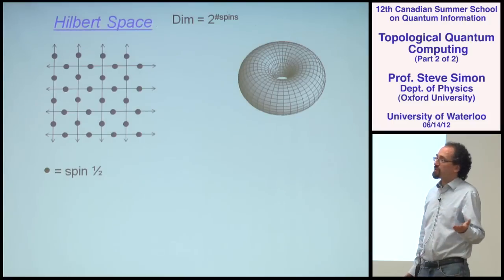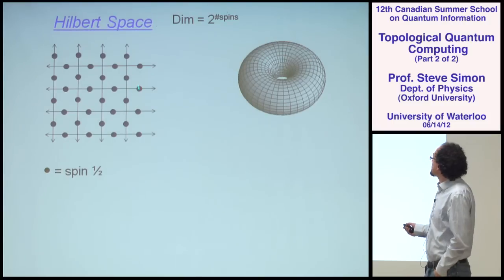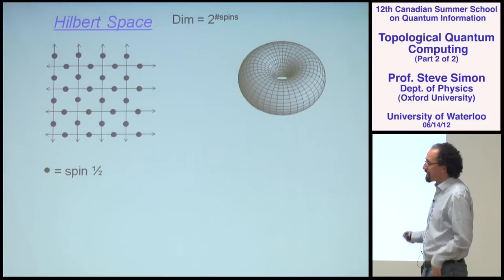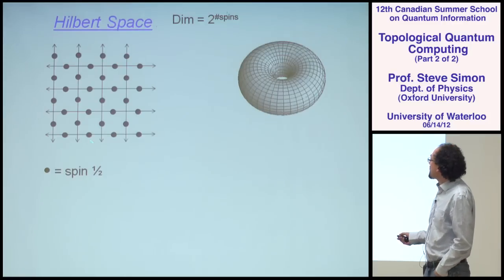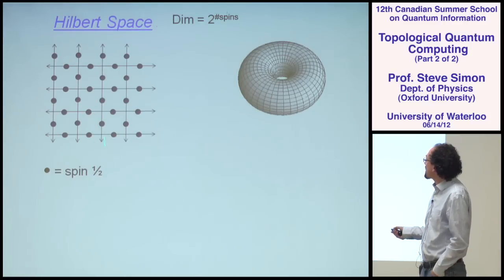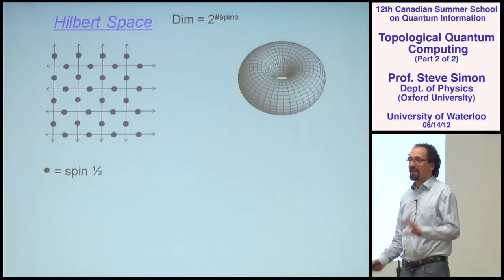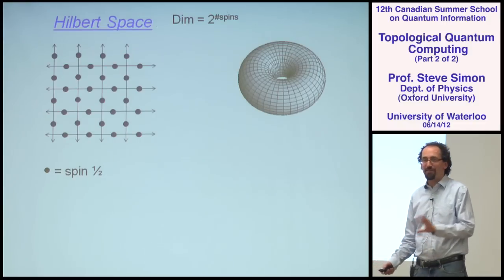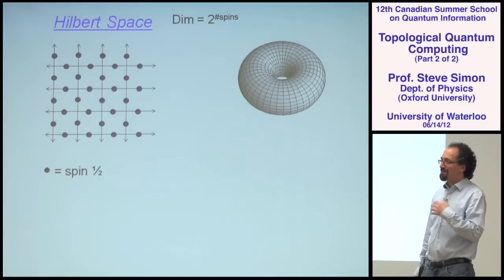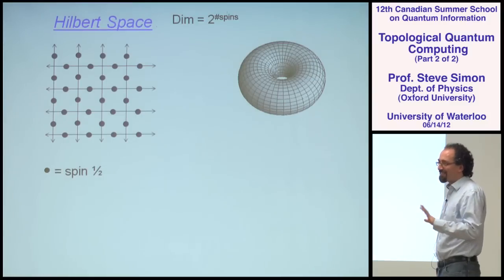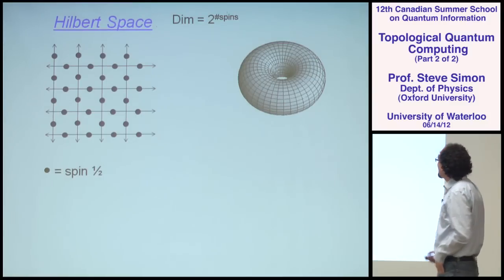The only thing I'm doing that's a little unusual is I'm going to take this square lattice and wrap it up into a donut. So it's periodic boundary conditions in both directions: you go off the top, you come in the bottom; you go off the right, you come back in the left — like the game Asteroids.